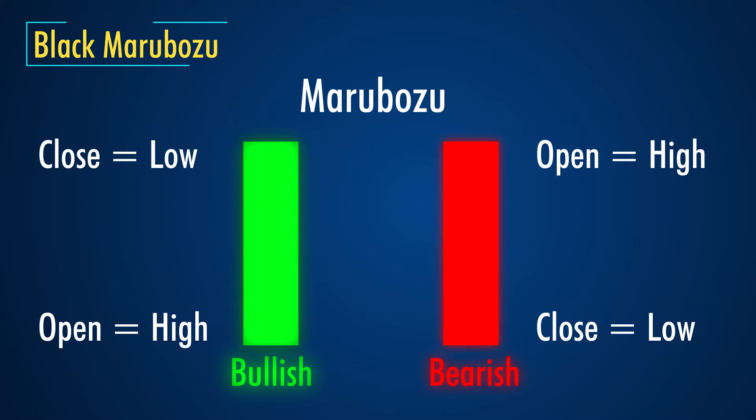In a bearish Marubozo, the price keeps on going lower during the day and finally closes at or near the low of the day. The range between the high and the low is very large.